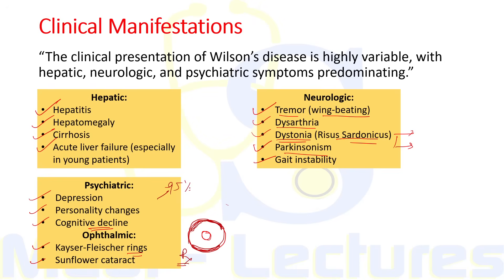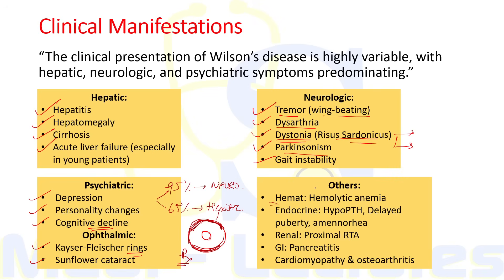The KF ring is usually present in up to 95% of patients with neurological Wilson's disease and up to 65% of patients with hepatic features. In hematology, patients can have Coombs-negative hemolytic anemia. Endocrine manifestations include hypoparathyroidism, delayed puberty, amenorrhea, and infertility. Renal copper deposition in the proximal convoluted tubule leads to proximal renal tubular acidosis with loss of calcium, phosphate, amino acids, and glucose.